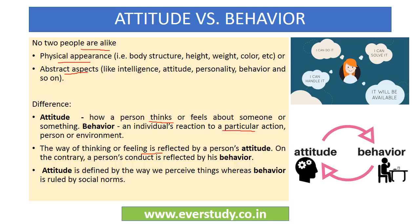So we can say: the way of thinking or feeling is attitude — your emotions and thoughts are your attitude — and a person's conduct, that is their acharan, is their behavior. Attitude is the way we perceive things, whereas behavior is ruled by social norms.